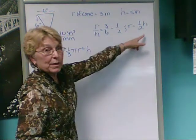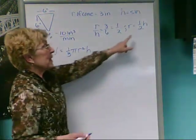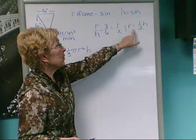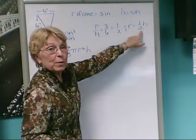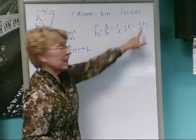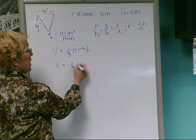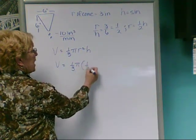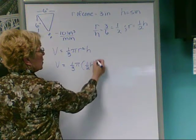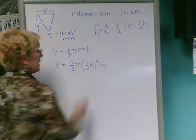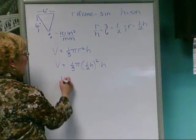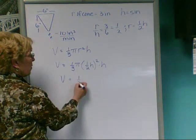But for this cone we have a special relationship, so it enables us to simplify a bit. And when we see radius, we can replace it with 1 half h. So volume is 1 third pi times 1 half h quantity squared times h.